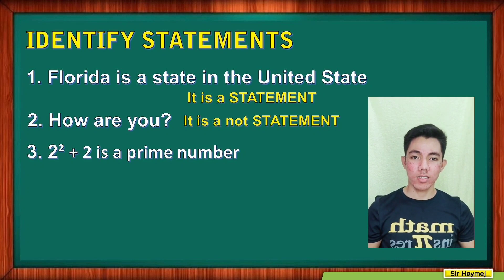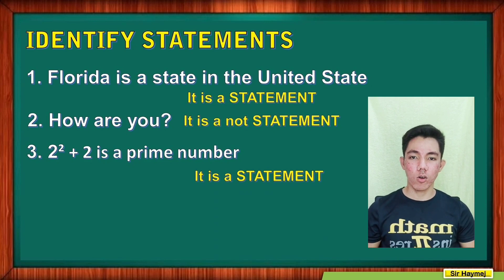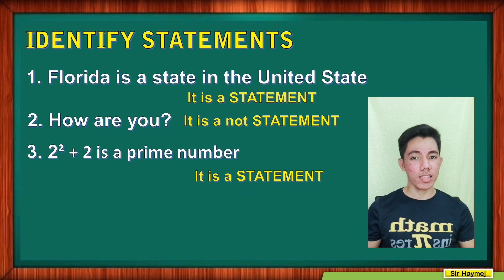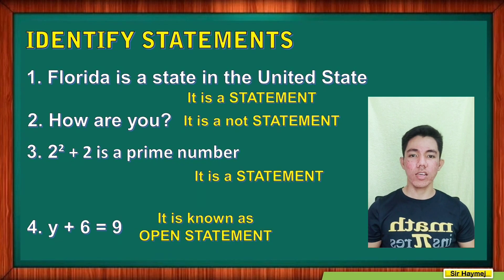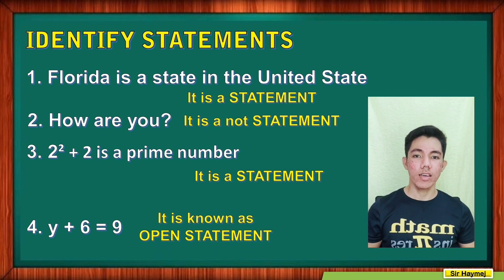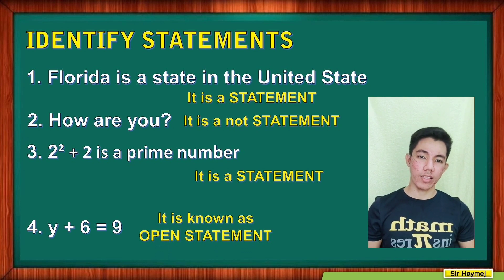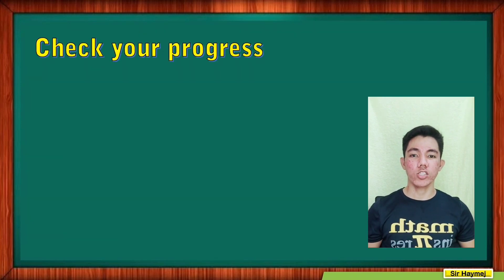Next: 'Two raised to two plus two is a prime number.' Is this a statement or not? Yes, it is a statement. We don't know if the result is a prime number — it could be true or false — so it is called a statement. Next: 'y plus six equals nine.' Is this a statement or not? Yes, it is a statement. This kind of sentence is what we call an open statement, because we can substitute a value for y to satisfy the equation. It could be either true or false.